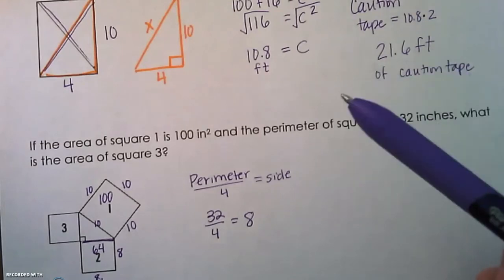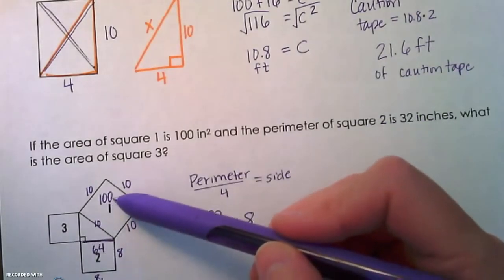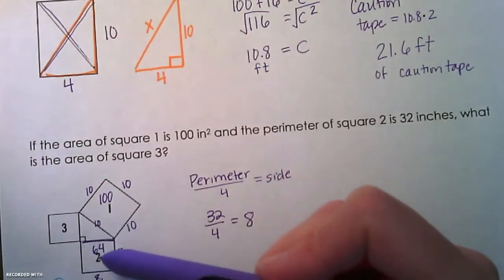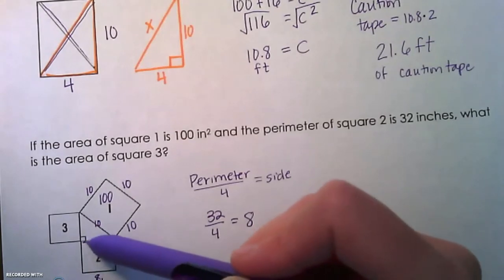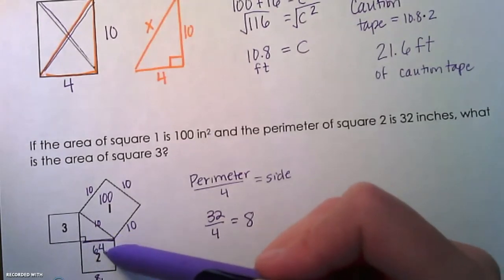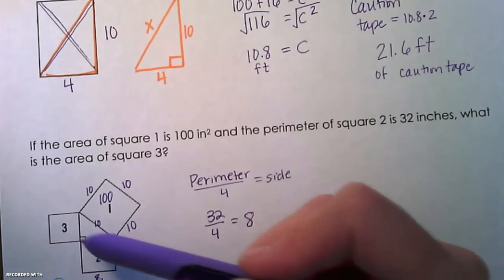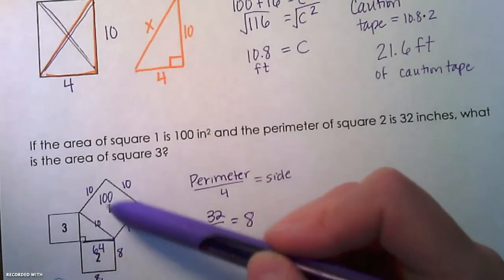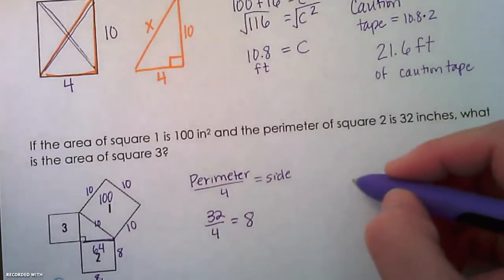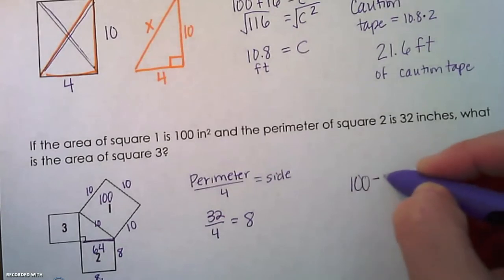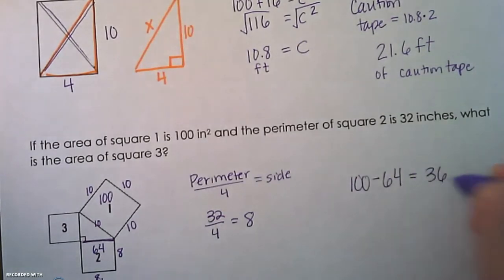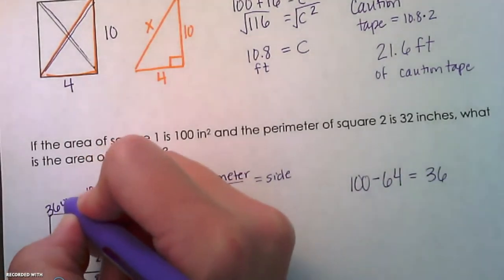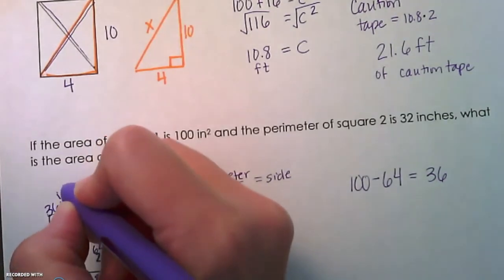Now we need to find the area of square three. The area of square one is 100, which represents the hypotenuse squared. The area of square two is 64, which represents that leg squared. To find the area of square three, we take the area of square one on the hypotenuse and subtract the area of square two: 100 minus 64 gives us 36 inches squared. That would be the area of square three.